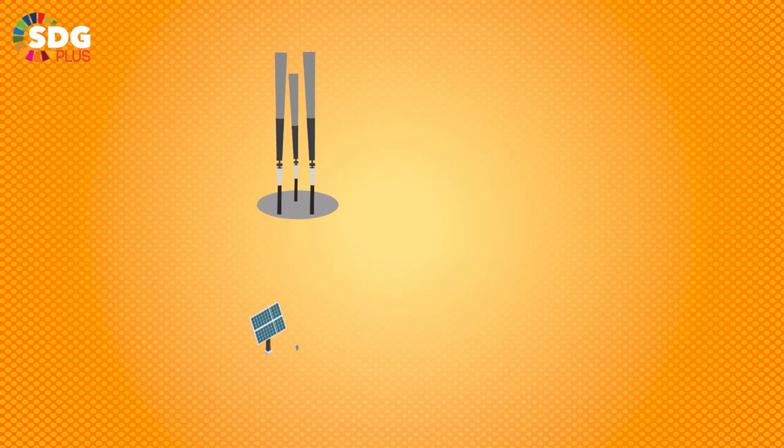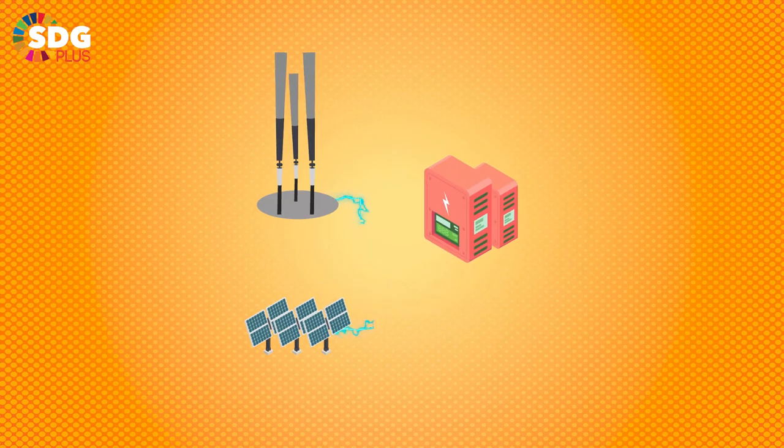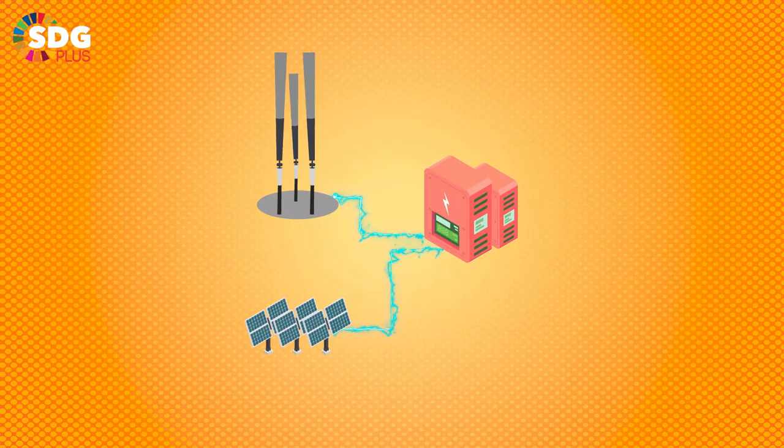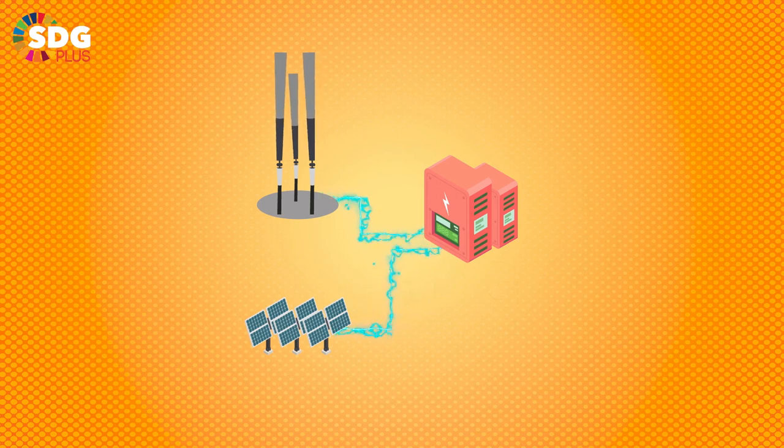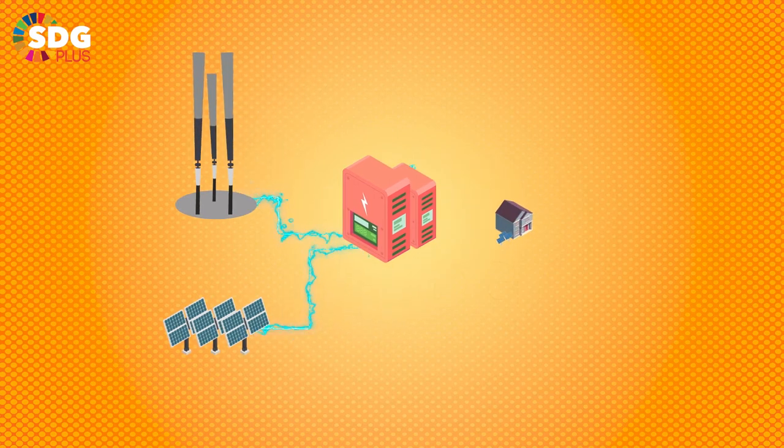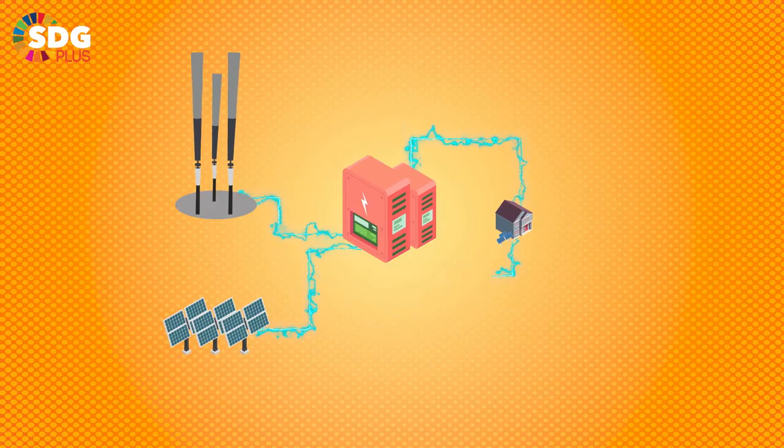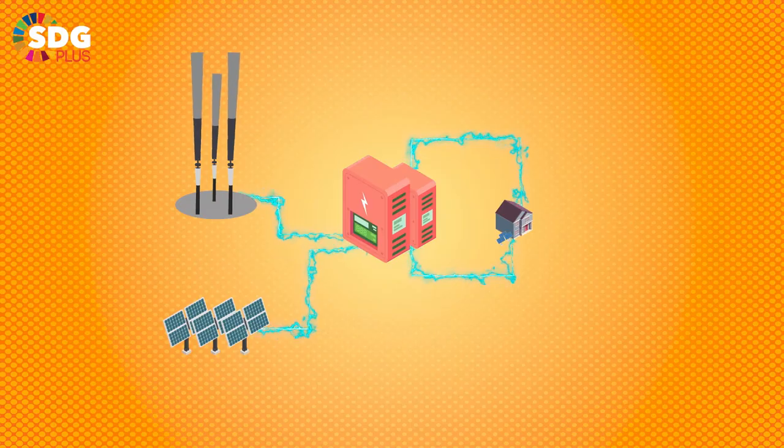The technology that could tie it all together is smart grids. A smart grid is an electricity network that enables a two-way flow of electricity and data through digital communication technology. This allows individual households to not only access electricity, but they can also sell their excess electricity back to the grid.